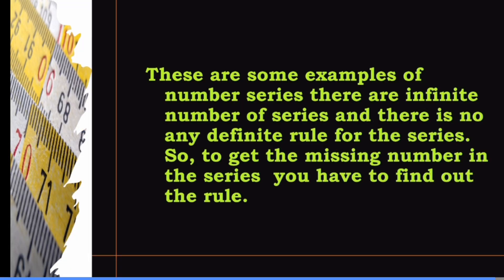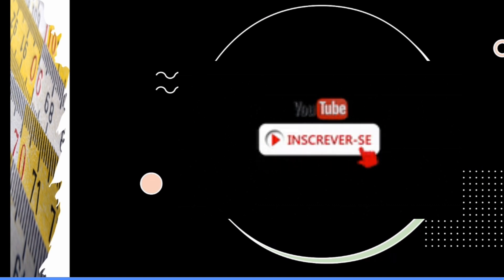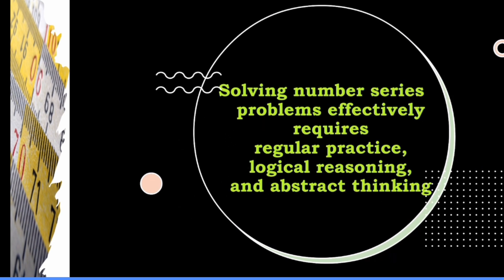These are some examples of number series. There are infinite number of series and there is no definite rule — you have to find out the rule for each series. To get the missing number, you must find out the rule or pattern by observing the series first. It may involve addition, subtraction, division, multiplication, or multi-operational series. Solving these problems effectively requires regular practice, logical reasoning, and abstract thinking. Hope everyone understood. Thank you.